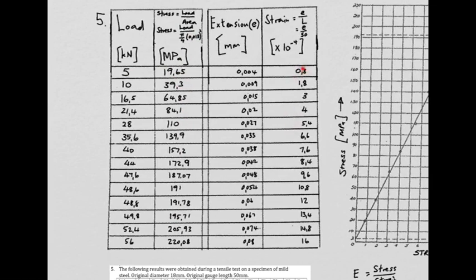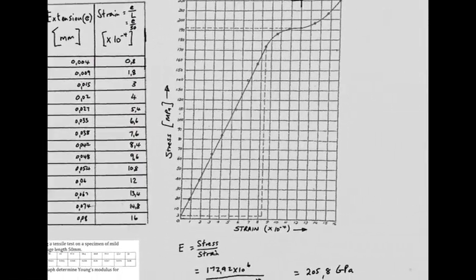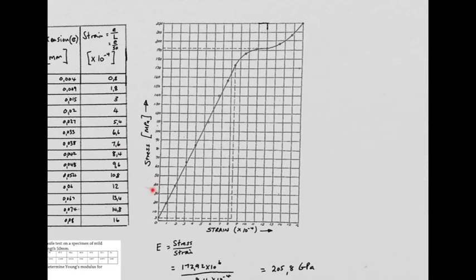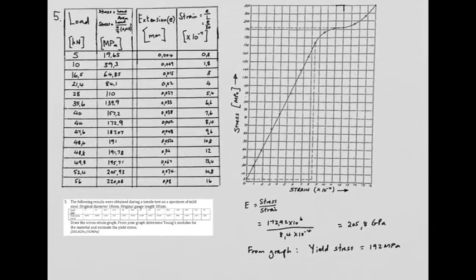You would take 0.004 divided by 50 and write it in. Then you draw a graph of stress versus strain, which interestingly has a very similar shape to our load extension graph, which we've done a number of times, except obviously the values are now stress and strain.